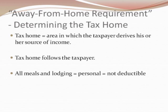This next topic is about determining the tax home under the away from home requirement. The tax home is the area in which the taxpayer derives his or her source of income. It is possible for a taxpayer never to be away from his or her tax home — in other words, the tax home follows the taxpayer. Thus, all meals and lodging remain personal and are not deductible.